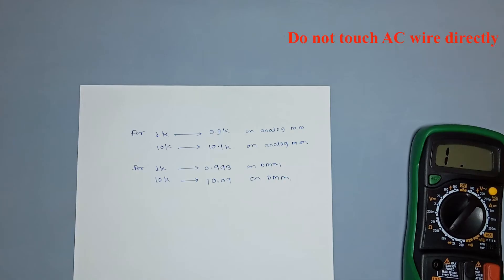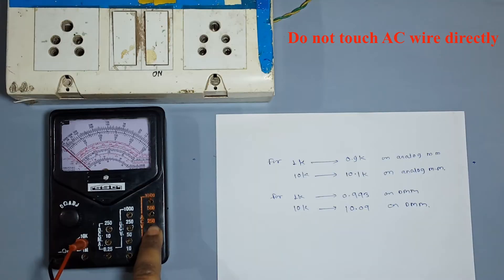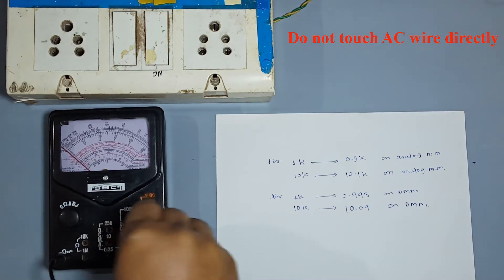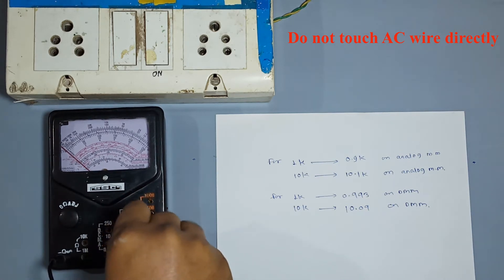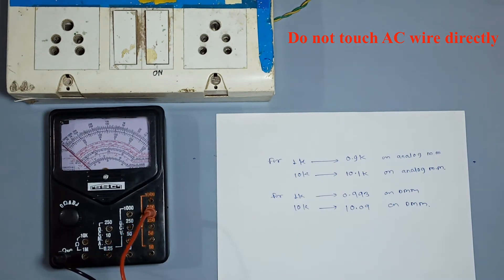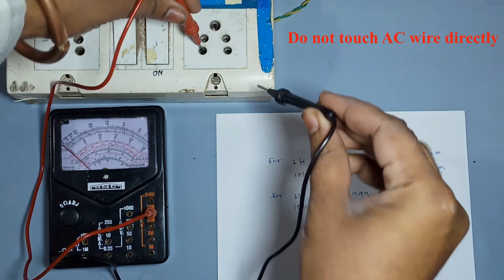AC power source: available source at home is 230 volt AC, plus or minus 5%, with frequency 50 Hz.